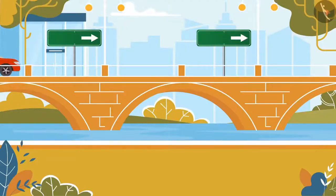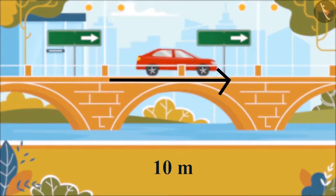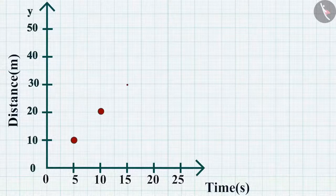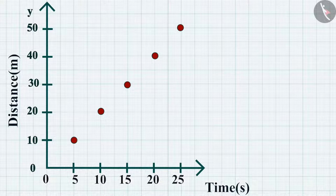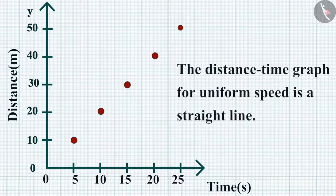Suppose the object covers 10 meters in the first 5 seconds; for the next 5 seconds it covers another 10 meters, and so on. Mark the points on the graph — if you join these points, you can see a straight line passing through the origin. Thus, for uniform speed, a distance-time graph is a straight line.